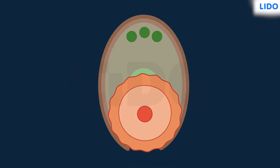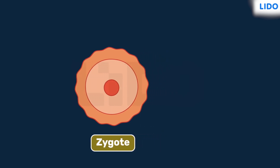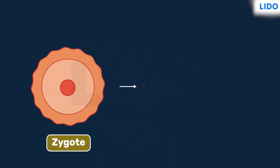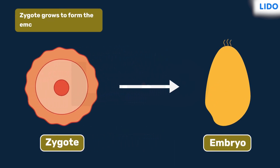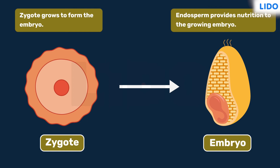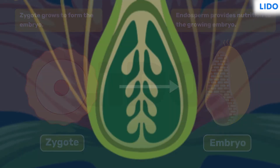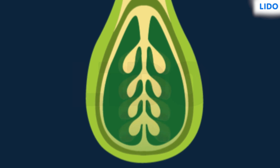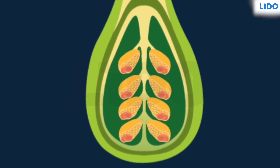The zygote divides continuously and grows to form an embryo. The endosperm serves as a source of food for the embryo. The ovary swells to form the fruit and the wall of the ovule forms a hard and tough covering that protects the embryo, and thus a seed is formed.